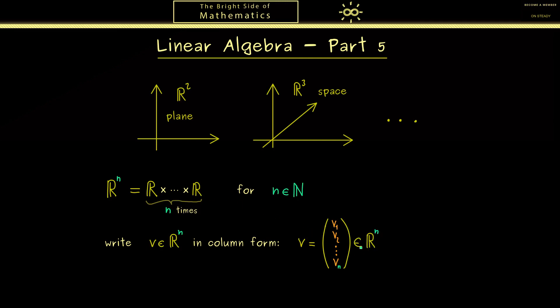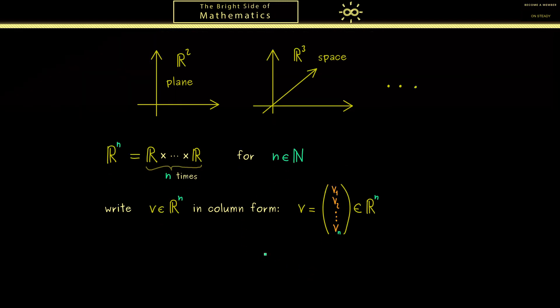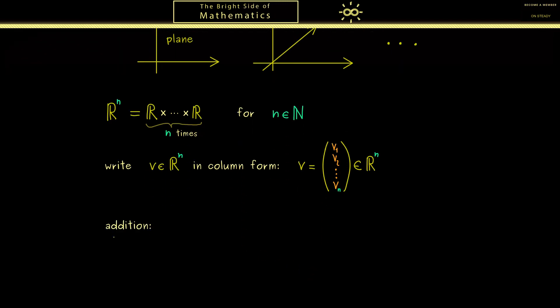Now as we have learned in the case R^2, we have two fundamental operations for such vectors here. The first one is the vector addition, and the second one is the scalar multiplication. And both can be naturally defined.